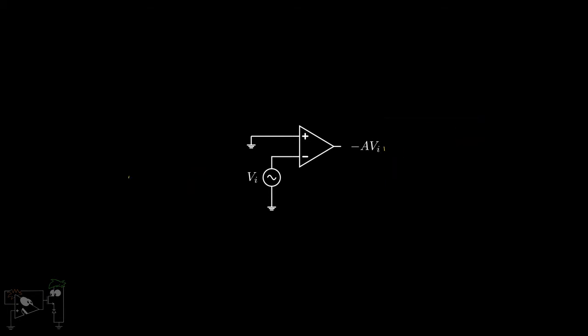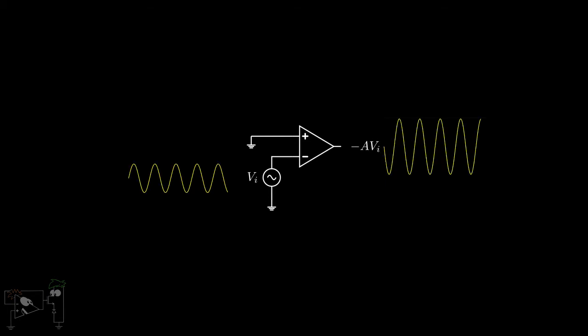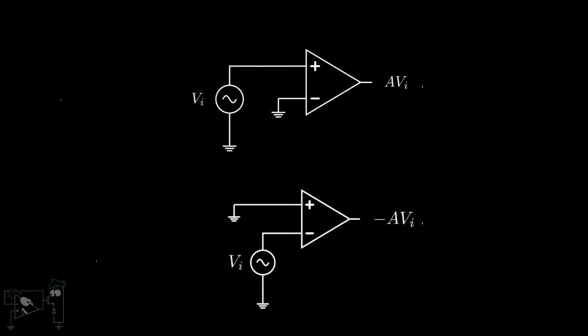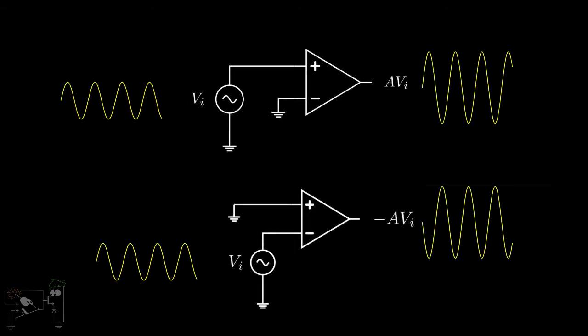So not only was the input amplified, but it was also inverted. For this very reason, the positive terminal is called the non-inverting terminal, while the negative terminal is called the inverting terminal of the op-amp.